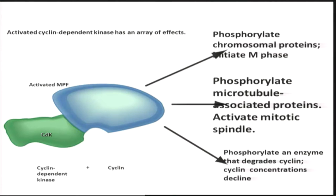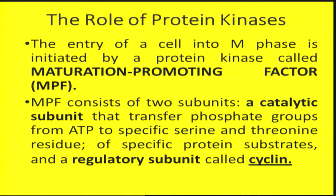Once a MPF, that is cyclin-dependent kinase bound to cyclin, is formed, it can bring about a variety of actions. It can phosphorylate chromosomal proteins, phosphorylate microtubule-associated proteins to activate the formation of the mitotic spindle, and also phosphorylate certain enzymes which degrade the cyclins. Once cyclins are degraded, the activity of cyclin-dependent kinase would also fall. The entry of the cell into M phase is initiated by maturation-promotion factors.